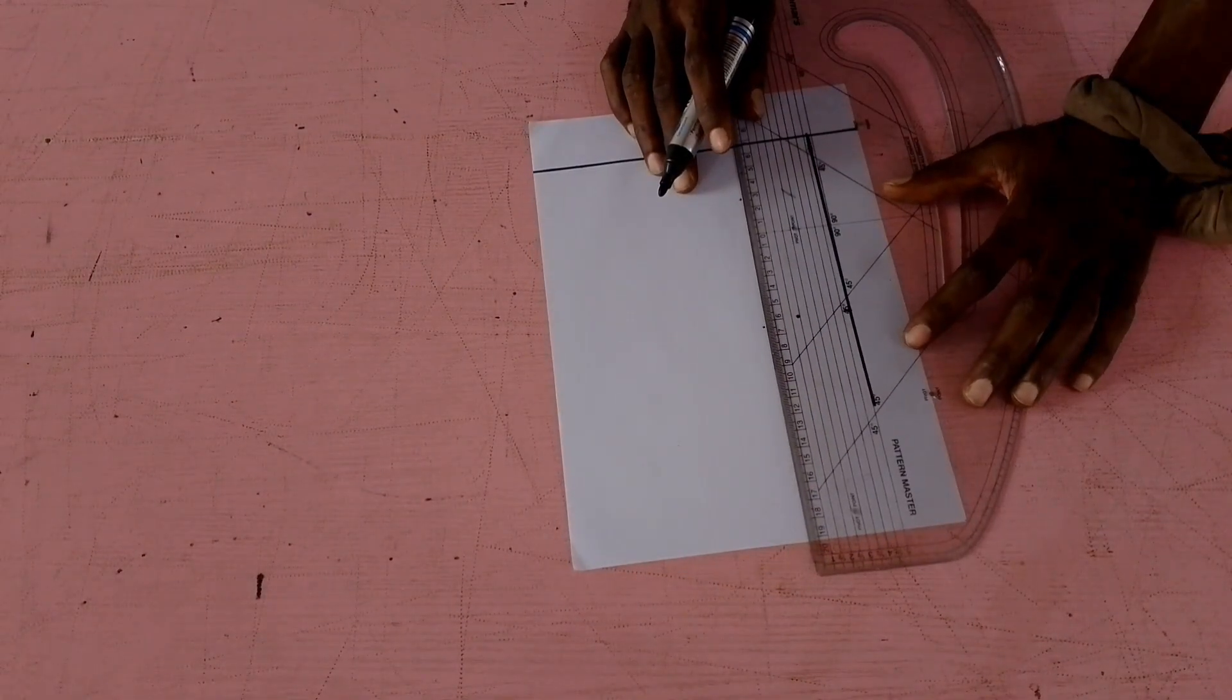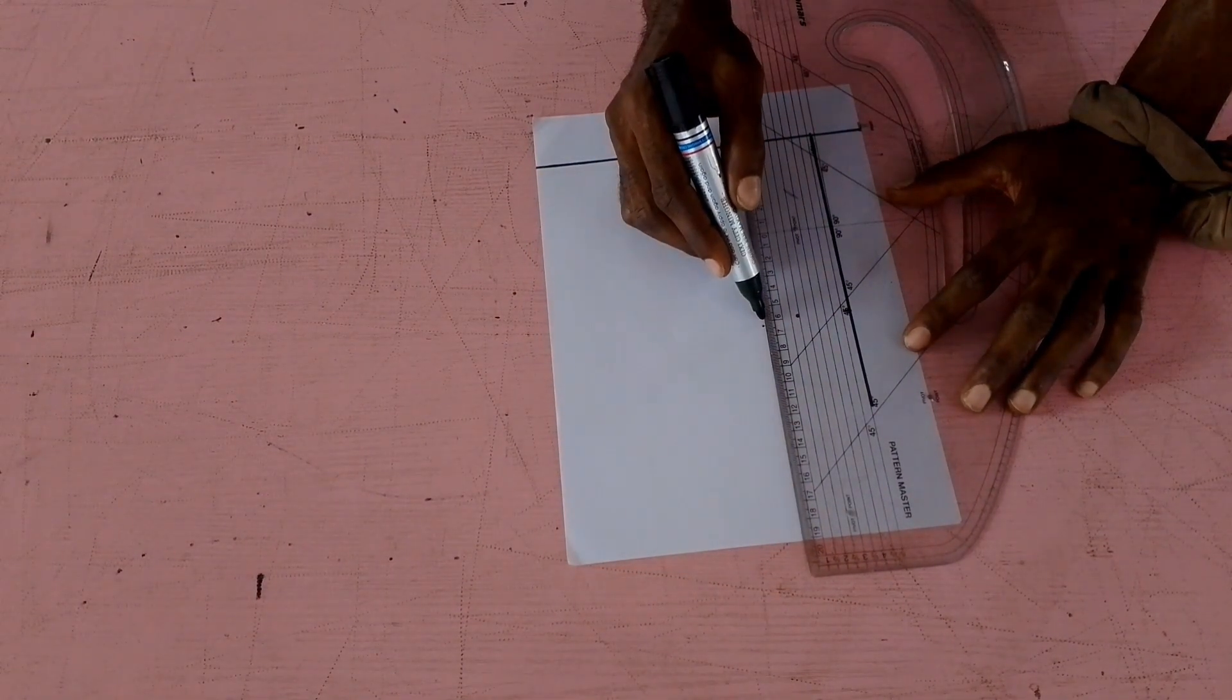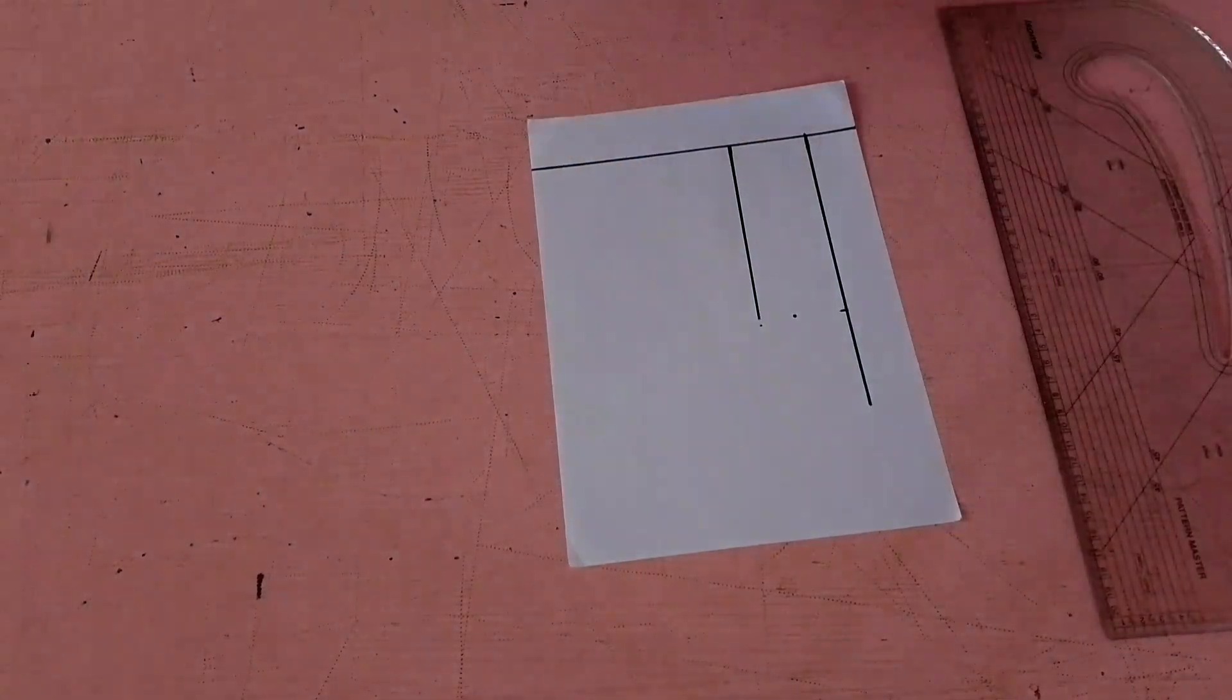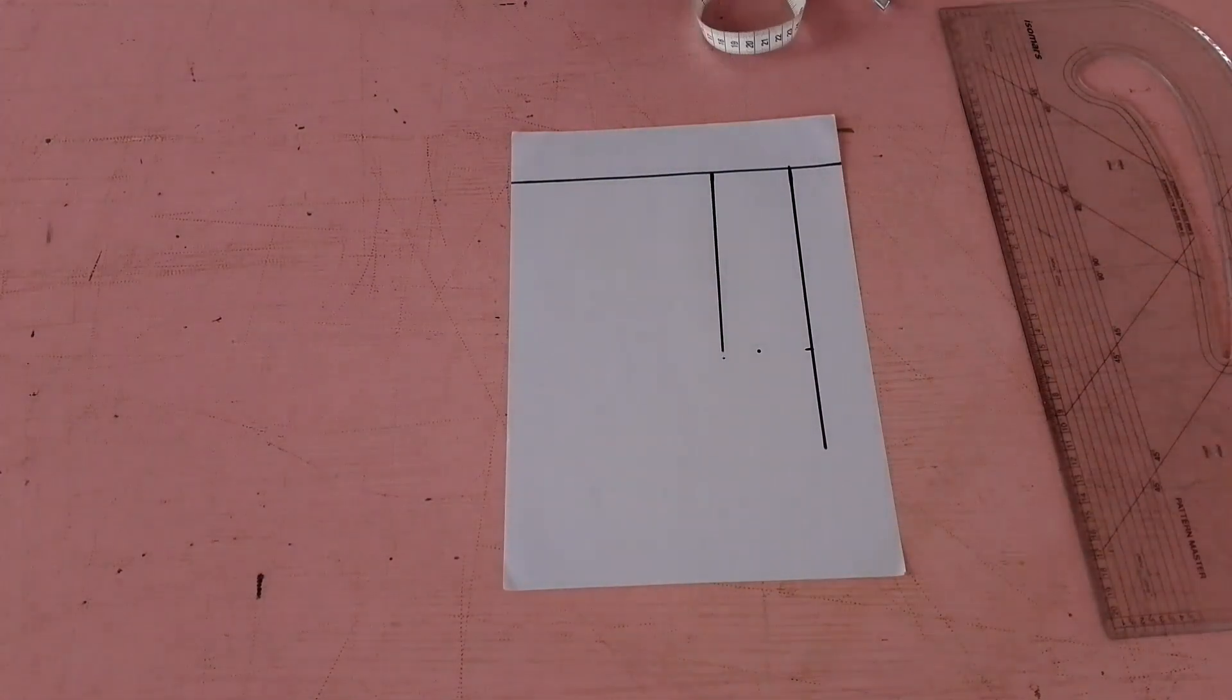Using your ruler, connect the width of the placket as shown, then connect the height as well.